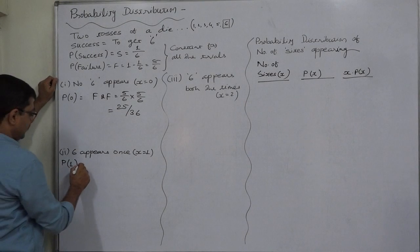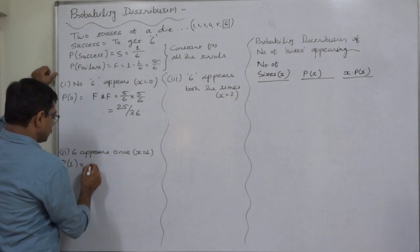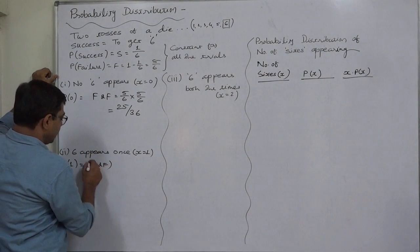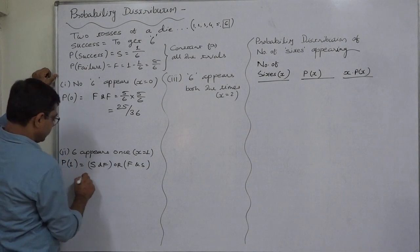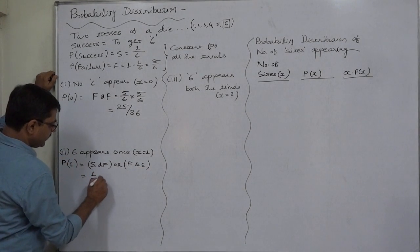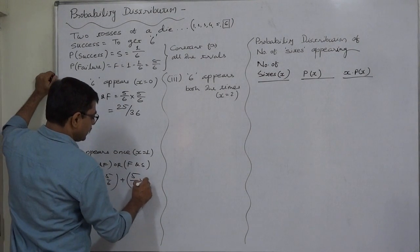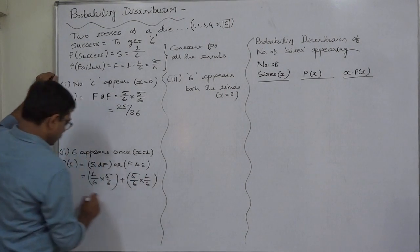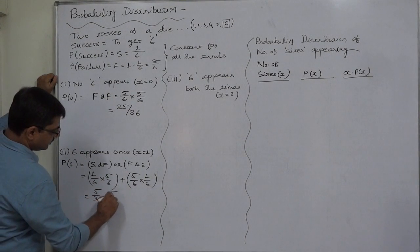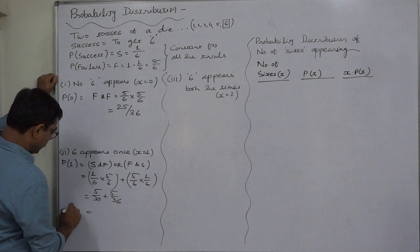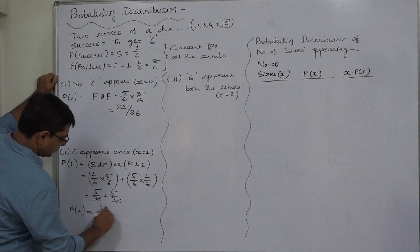P(X=1): in how many ways is this possible? Two mutually exclusive ways — success in the first trial and failure in the second, or failure in the first and success in the second. So it is one by six times five by six, plus five by six times one by six, which gives five by thirty-six plus five by thirty-six. The probability of exactly one six is ten by thirty-six.